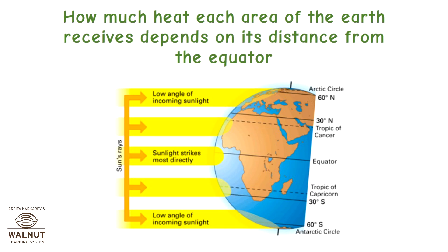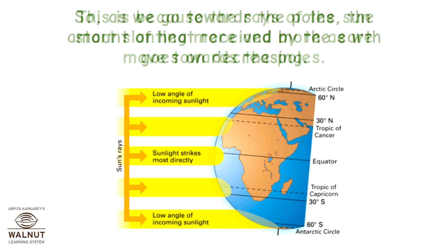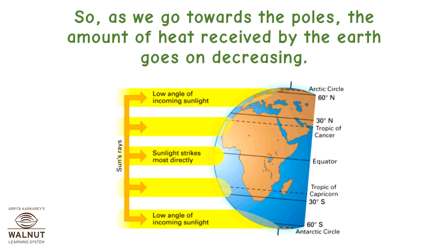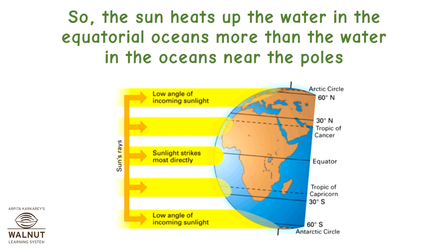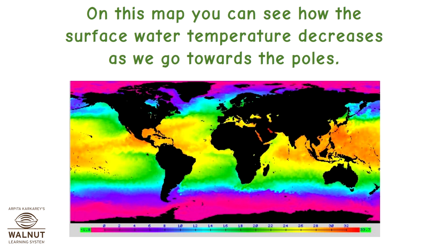How much heat each area of the earth receives depends on its distance from the equator. The rays of the sun slant more and more as we move towards the poles, so the amount of heat received by the earth goes on decreasing towards the poles. The sun heats up water in the equatorial oceans more than water in the oceans near the poles. However, this applies just to the top layer of water — as we go deeper, the water is cold anyway. On this map, you can see how surface water temperature decreases as we go towards the poles.